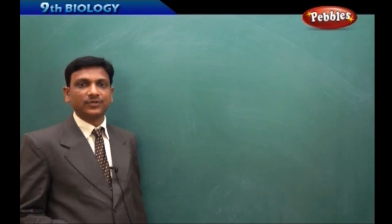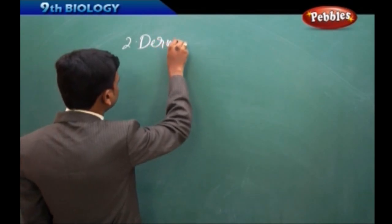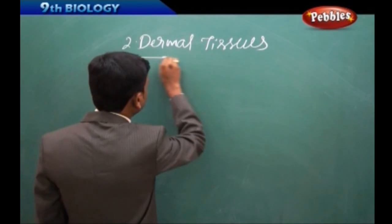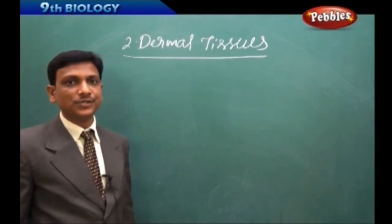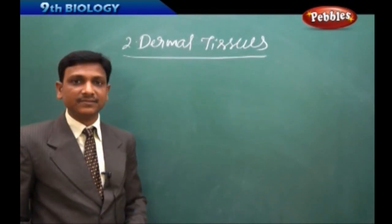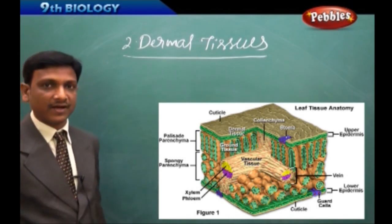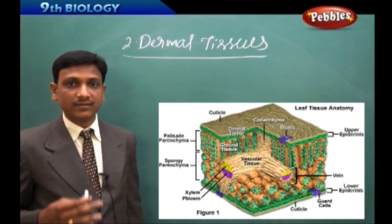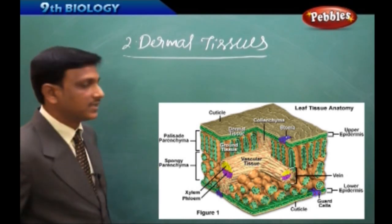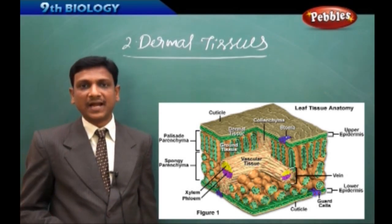We learned about meristematic tissues. Now the second type is dermal tissues. What are dermal tissues? These are the tissues that form the covering of a plant, just like how animals and humans have skin. In the same way, plants also have some kind of protective covering. The main function of these tissues is protection. The protective covering of plants is called dermal tissues. We find these dermal tissues on the surface of the plant and its parts — for example, on the surface of a leaf.